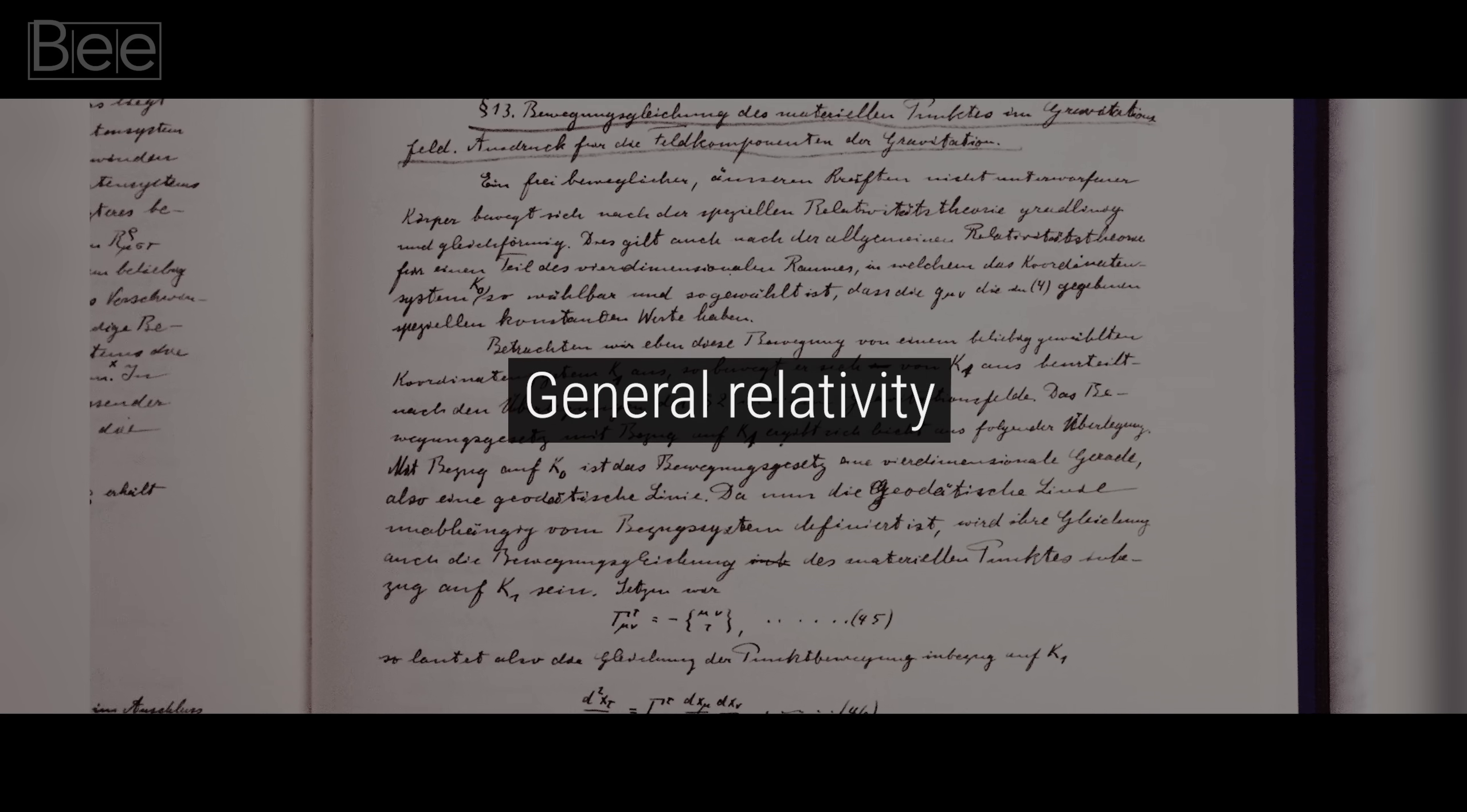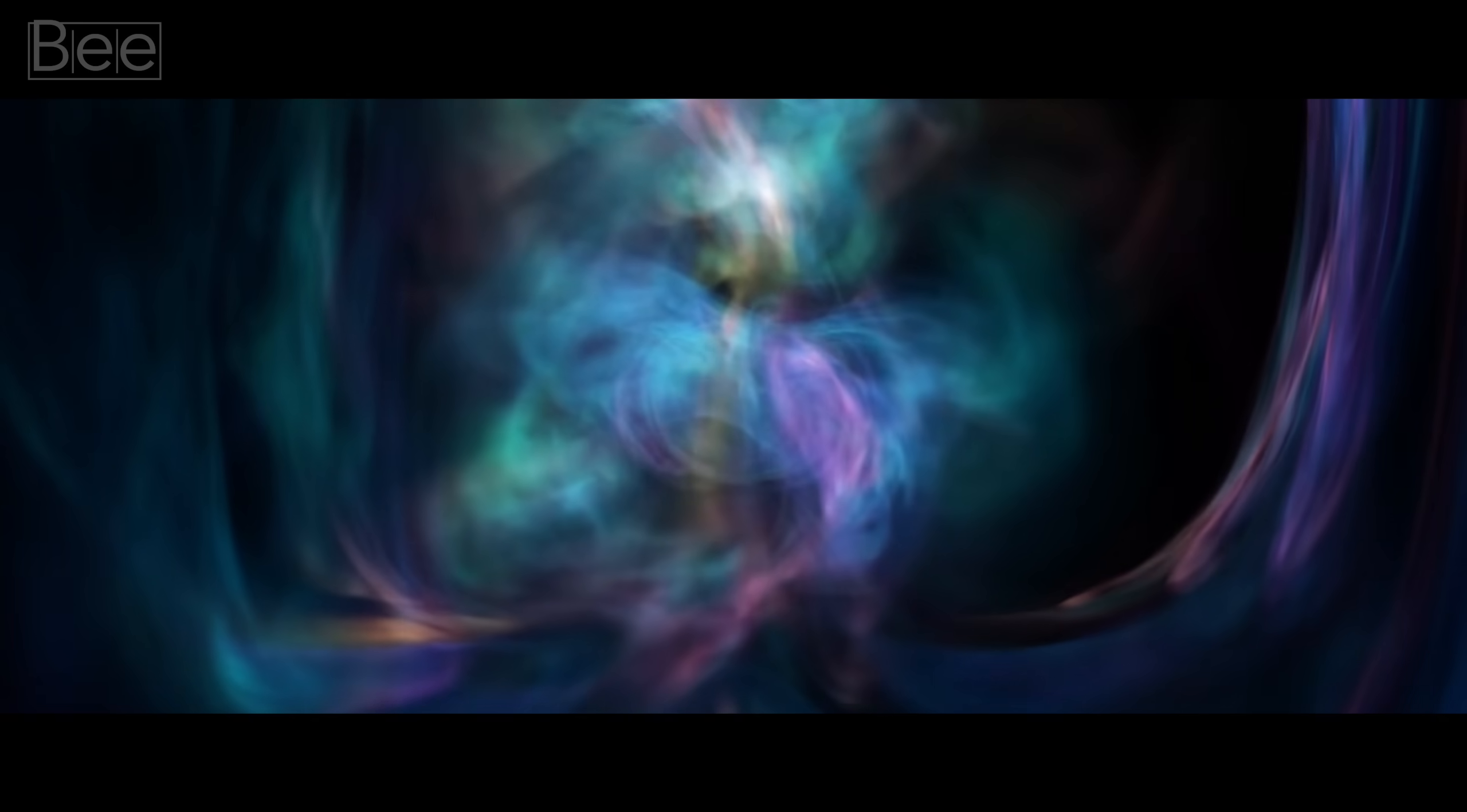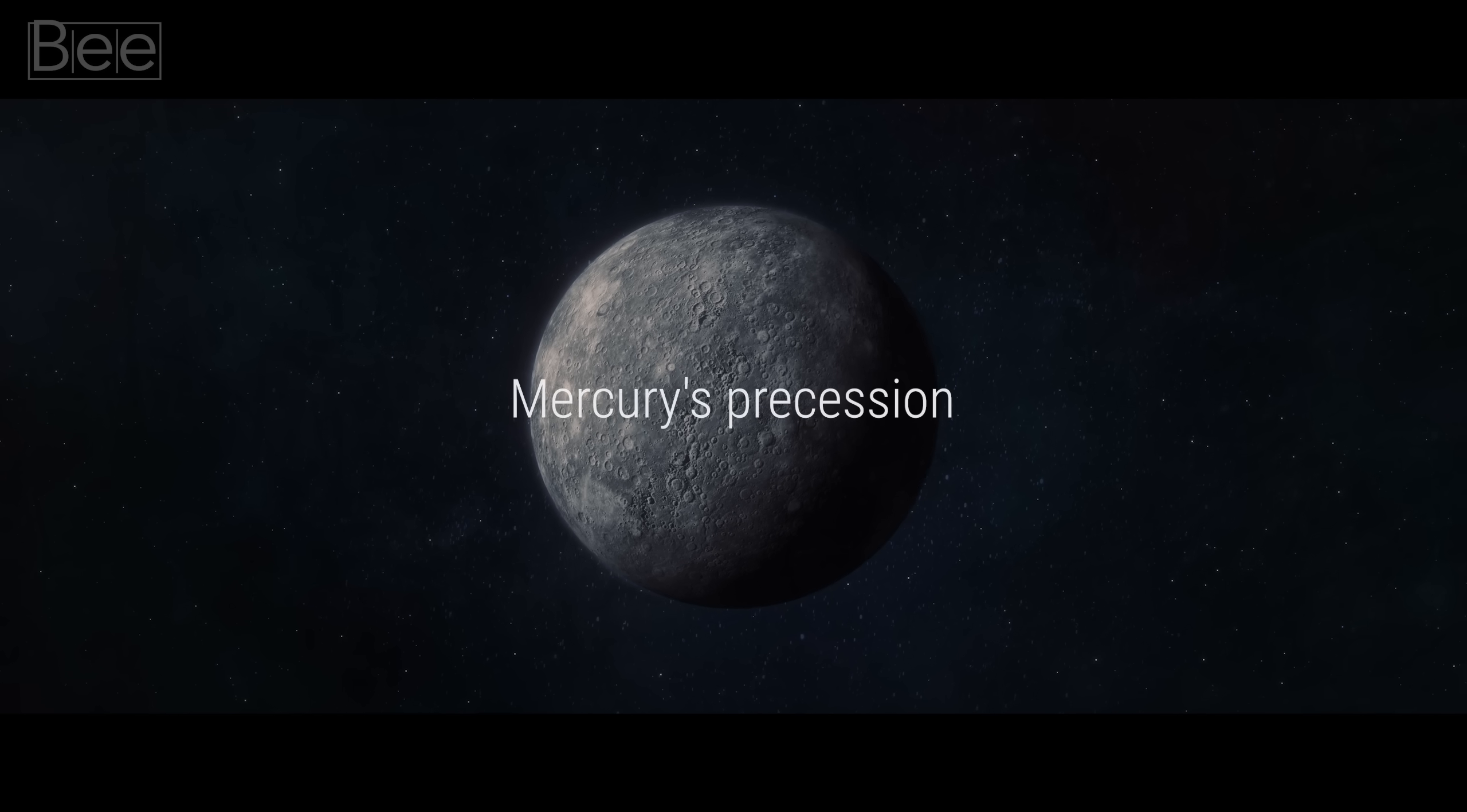In 1915, Einstein published his theory of general relativity, or in other words, his theory of gravity. In this theory, Einstein explained gravity and its source. He answered all the questions that Newton couldn't, like Mercury's precession.